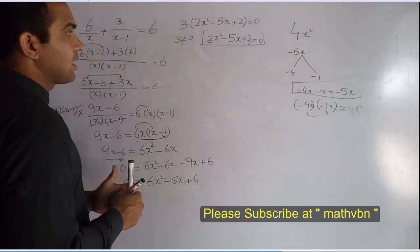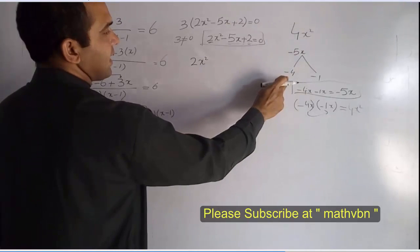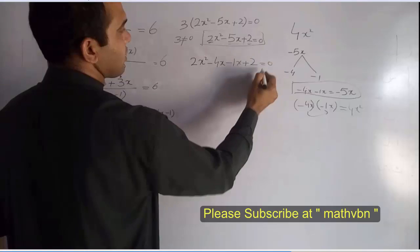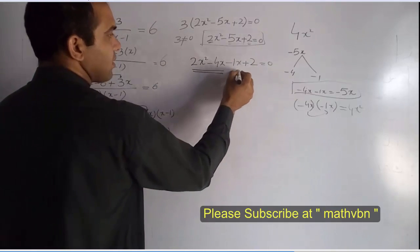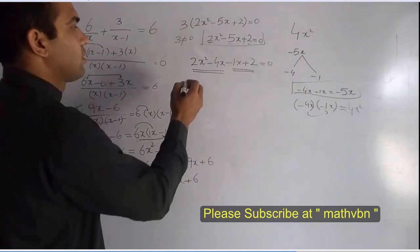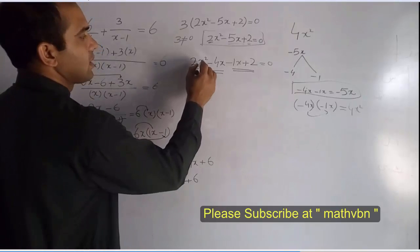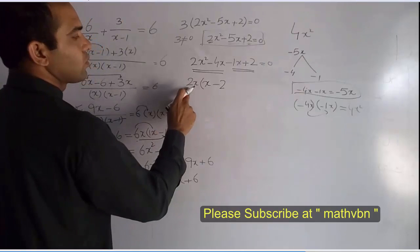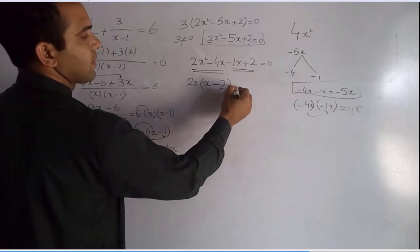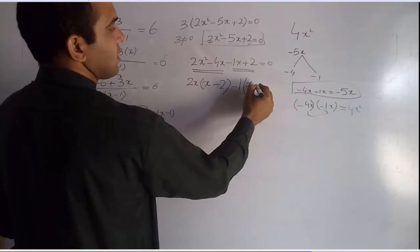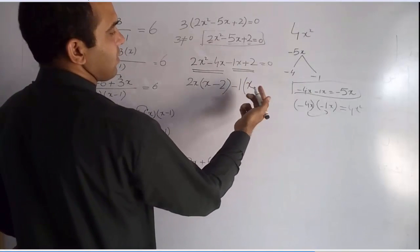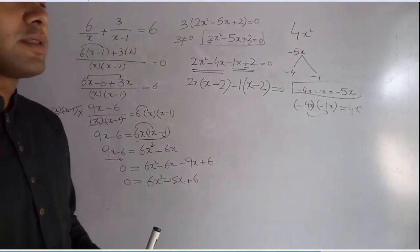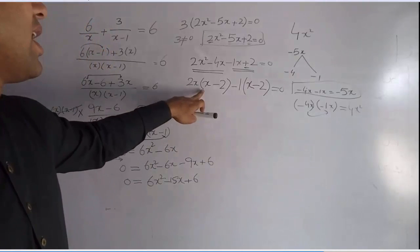Write the factors into our equation: 2x squared minus 4x minus 1x plus 2 is equal to 0. Now take common factors from pairs: from the first two terms, 2x is common, giving 2x times x minus 2. From the last two terms, minus 1 is common, giving minus 1 times x minus 2. The sign changes accordingly.